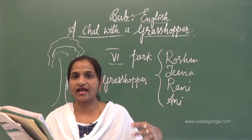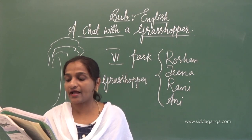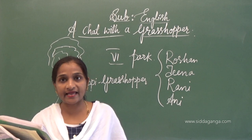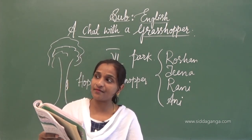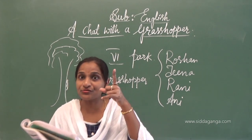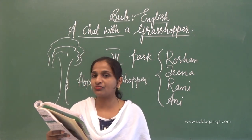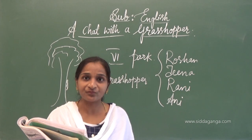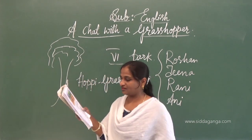Hoppy is asking: Can you guess who I am? Raju replied: You are a grasshopper. Hoppy said: Yes, I am a grasshopper. Then Rani asks: Where do you live? Where can we find you? Rani is asking the grasshopper where it lives and where they can find it.